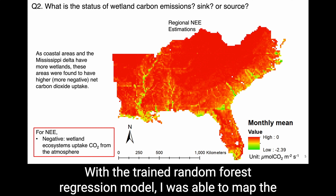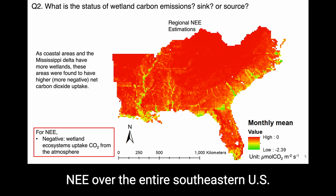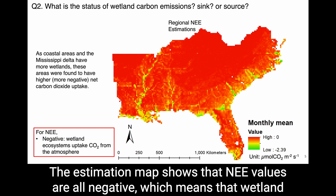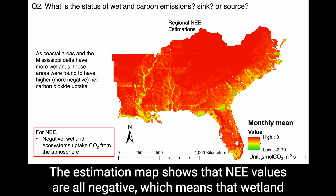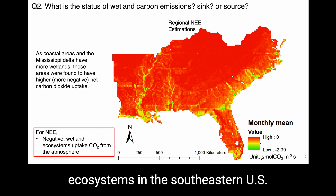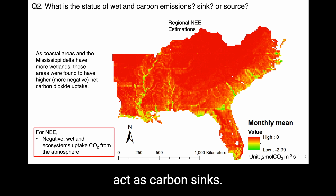To answer the second question — what is the status of wetland carbon emissions: are wetlands carbon sinks or sources? — the estimation map shows that NEE values are all negative, which means that wetland ecosystems in the southeastern U.S. uptake carbon dioxide from the atmosphere, i.e., act as carbon sinks.